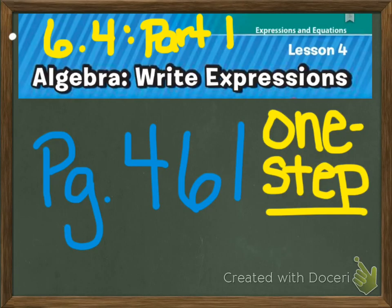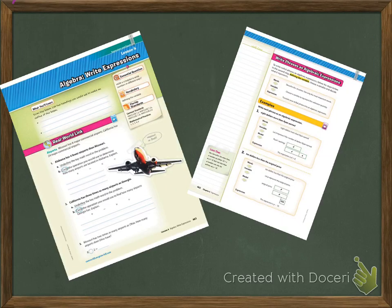Alright, we're starting 6.4 Algebra Write Expressions. This is going to be part one, which is going to address one-step expressions, and that's on page 461. Please make sure you're open to page 461 to take some notes. You're also going to need a separate piece of paper for this, because we will be taking some notes at the end on your own piece of paper.